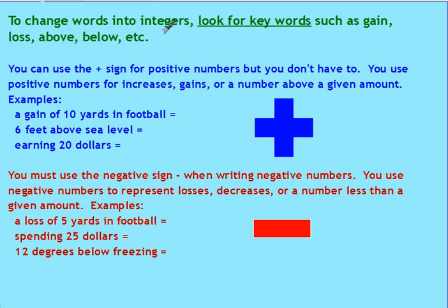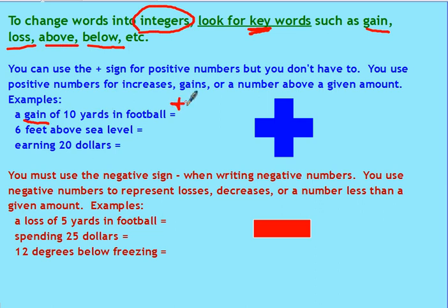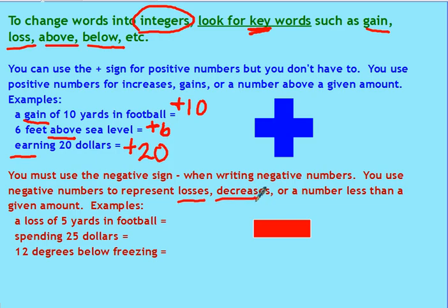To change words into integers — remember, positive or negative numbers — simply look for keywords such as gain, loss, above, or below. For example, a gain of 10 yards in football would be a positive 10. Six feet above sea level would be a positive 6 as an integer. Earning $20 would be positive 20. For negative numbers, you want to look for loss, decrease, or below. For example, a loss of $5 in football would be a negative 5.